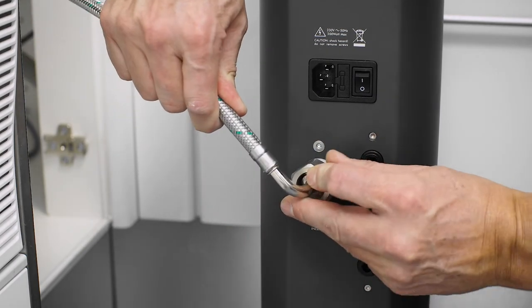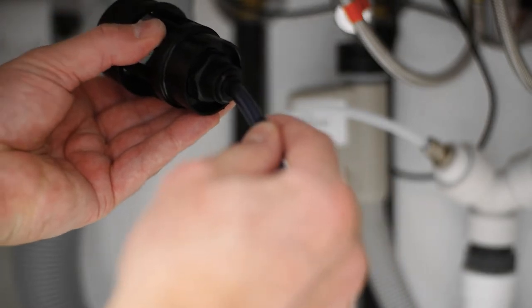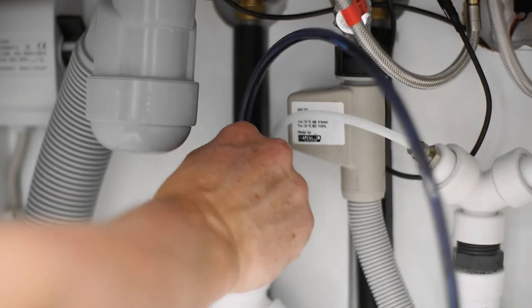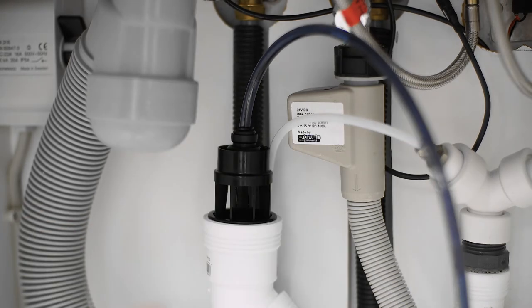You can now turn on the water supply. Attach the 8 mm drain hose to the small black saffon. This ensures that unclean water cannot run back into the system.